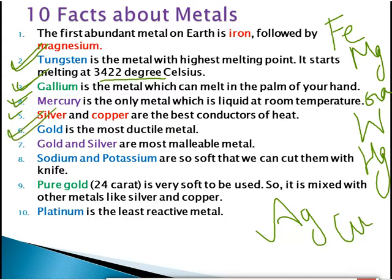Next, gold is the most ductile metal. Ductility is a property of a metal by which a small piece can be drawn into a wire. From just one gram of gold, we can make up to two kilometers of wire.